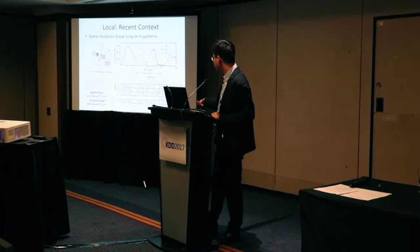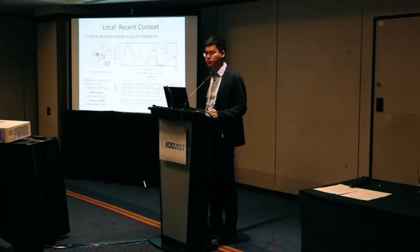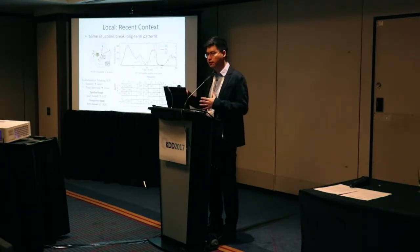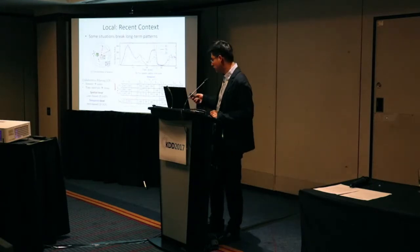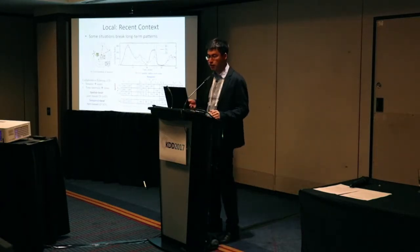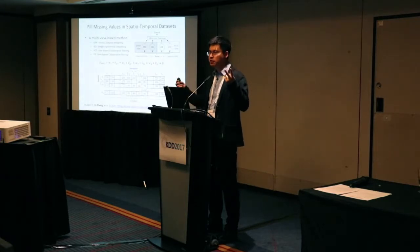We can regard a sensor as a user and a timestamp as an item, and use collaborative filtering (CF) algorithms to fill missing values — similar to recommendation systems. We can use a user-based CF model or item-based CF model. This gives us four views in total: two from the spatial-temporal dimension (spatial and temporal), and two from the global-local dimension (global and local), giving us a two-by-two combination of four views.